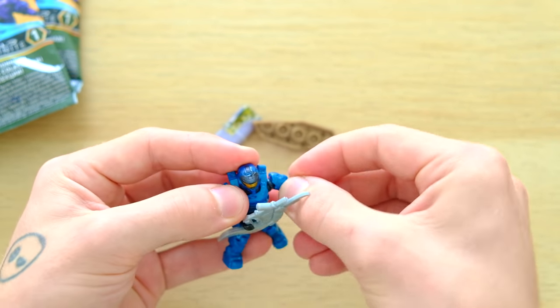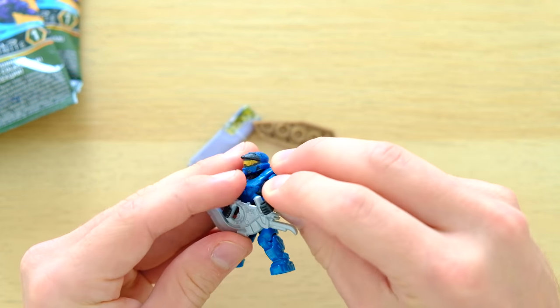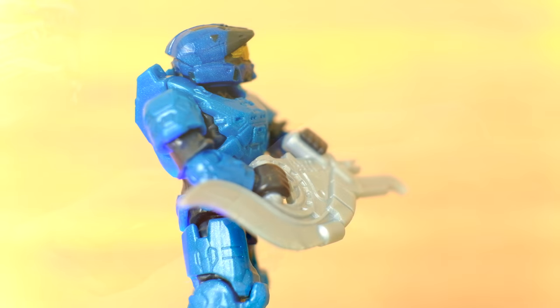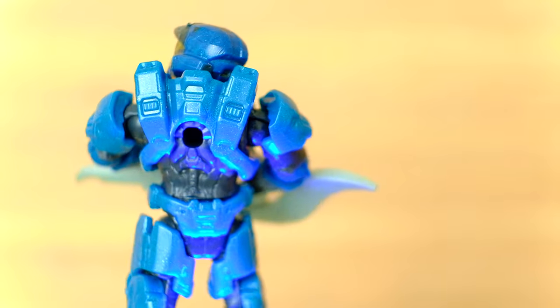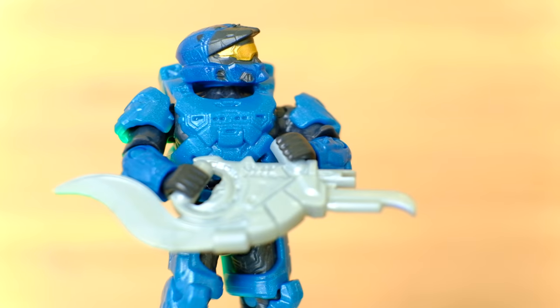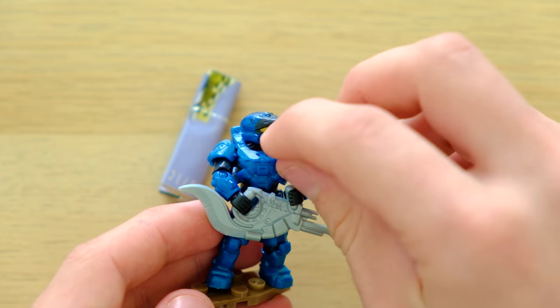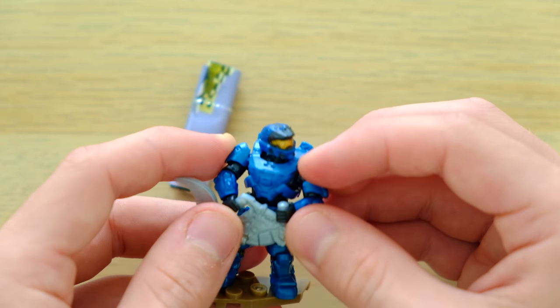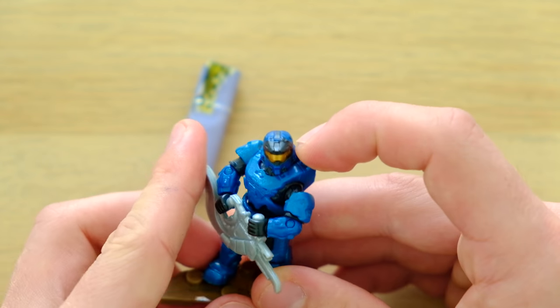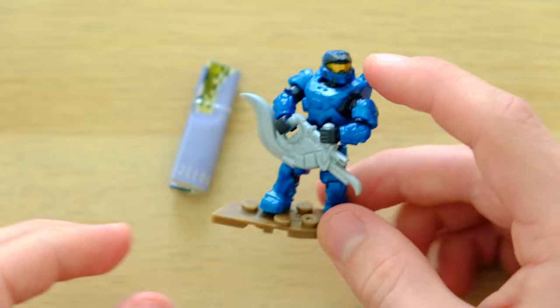The Mark 7. People read into Mega Construx figures a lot. They try and determine whether certain weapons will be in Halo Infinite. I wouldn't say that any of the returning weapons in the Halo Infinite blind bags confirm that they're in Halo Infinite. This is the Mark 7, the first time I've found this figure. It's looking really nice. It's got a slightly different colored helmet, I wonder if that's a cast molding issue.